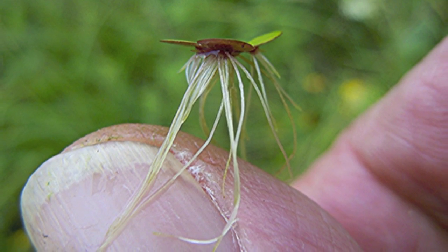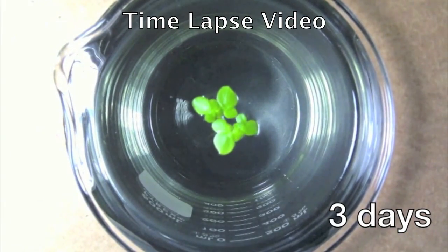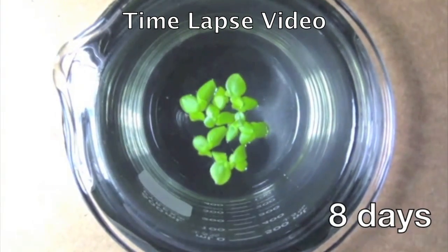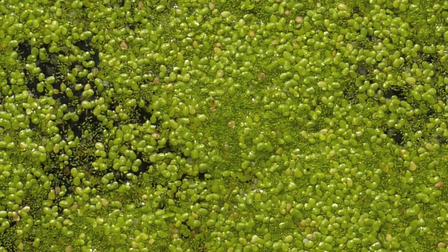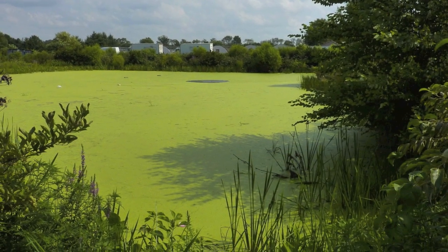Duckweed is the smallest known flowering plant. It's a common aquatic plant that floats on top of the water surface, kind of like a small lily pad. You've probably seen duckweed form these large green carpets that just take over your local pond or lake in the hot summertime.